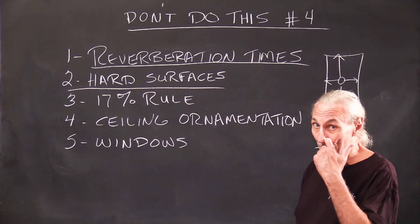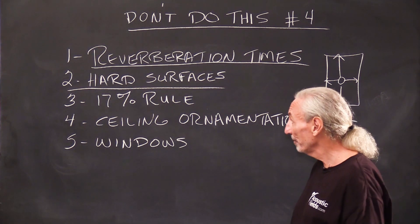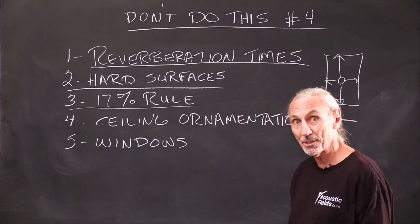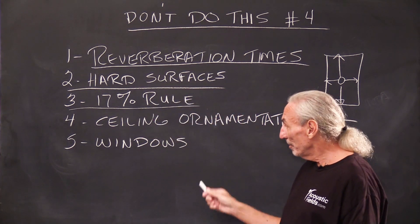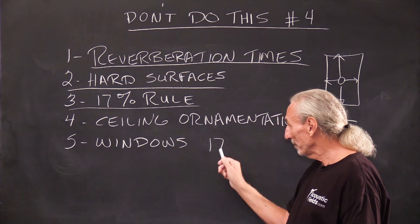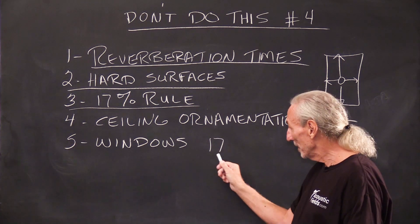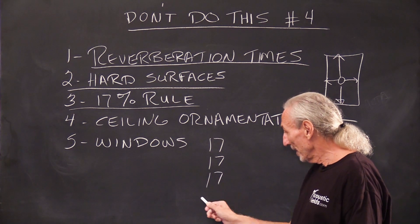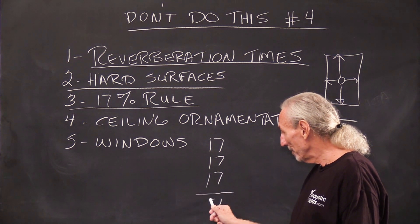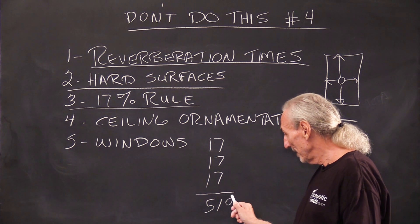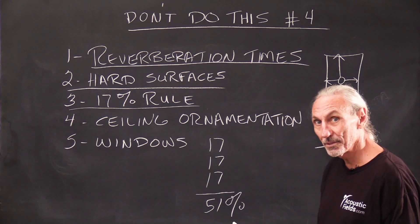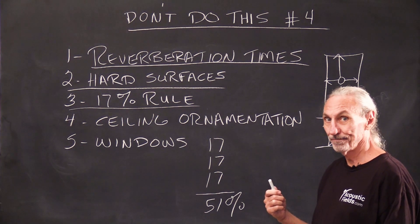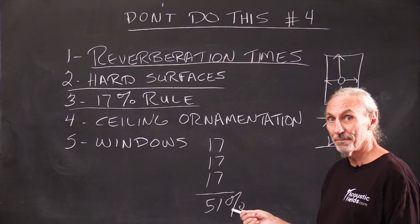So how are we going to treat all of this? We know that roughly every surface contributes 17% to the problem. So if we treat one surface, we get a 17% solution. We treat another one, another one, and now we're at 51%. Is this enough to have an audible impact on reverberation times? One would think, but it's not.